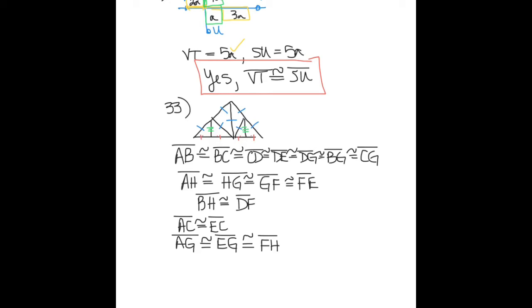Number 33 is the picture of the struts inside of a bridge or the roof of a house. You have to name all the segments that are congruent. So here goes: segment AB is congruent to segment BC is congruent to segment CD is congruent to segment DE is congruent to segment DG is congruent to segment BG is congruent to segment CG. Those are all of the blue segments in my picture.